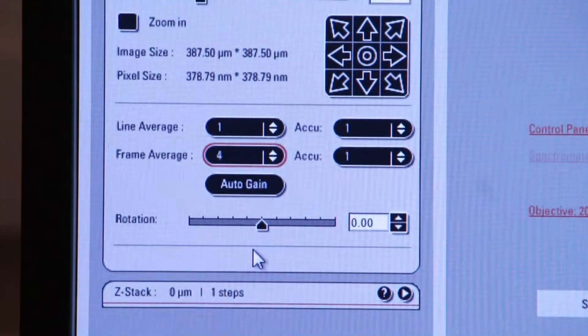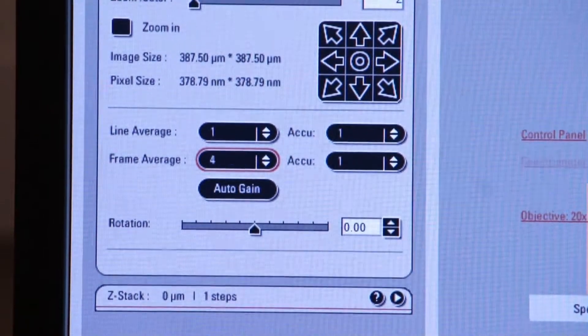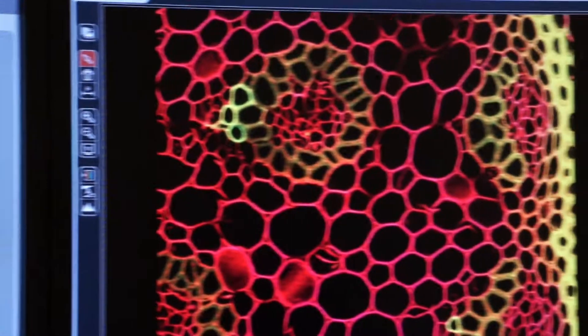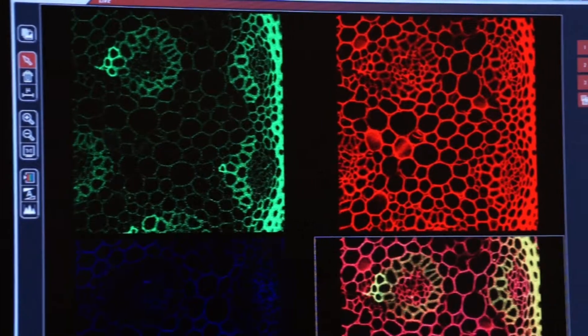So now we're going to average each of four frames together and let's see what our image looks like. I'll click on capture image. Watch the screen here and you'll see our high resolution image come up a little bit faster and a little bit grainier.